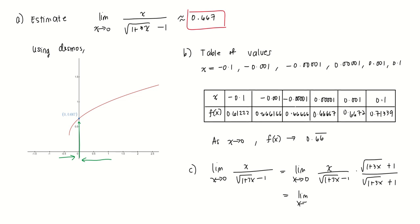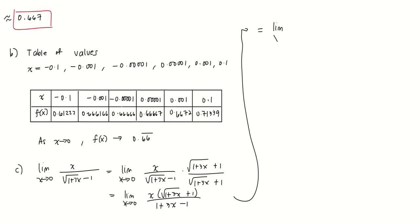It's going to equal the limit as x goes to 0 of x times square root of 1 plus 3x plus 1 all over 1 plus 3x minus 1. This gives us the limit as x goes to 0 of square root of 1 plus 3x plus 1 over 3.